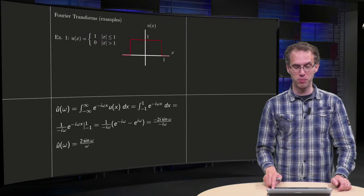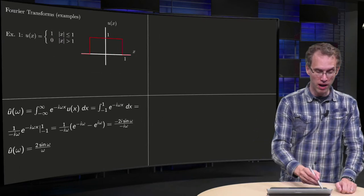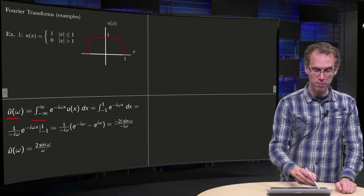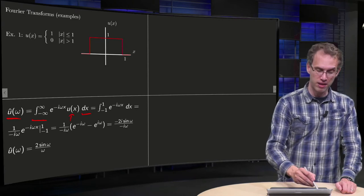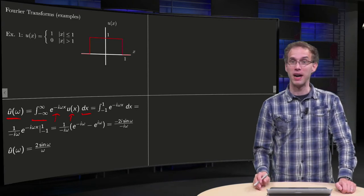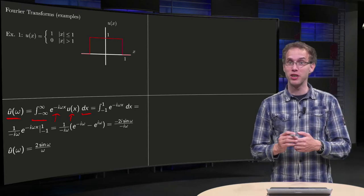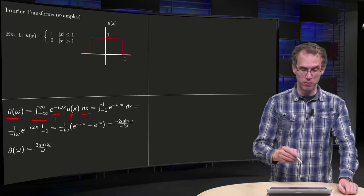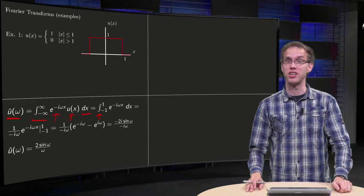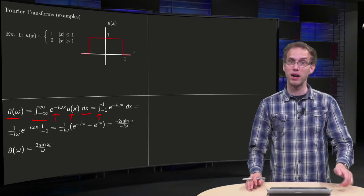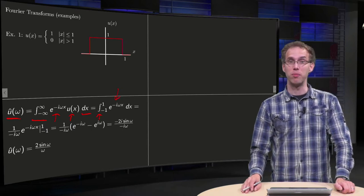So we can take the Fourier transform. What happens if we compute it? û(ω) — we integrate from minus infinity to infinity with respect to x, put u(x) here and multiply with e to the power minus iωx. Since u(x) is 0 everywhere except between minus 1 and 1, we integrate from minus 1 to 1, and between minus 1 and 1, u is just 1, so we are only left with e to the power minus iωx.